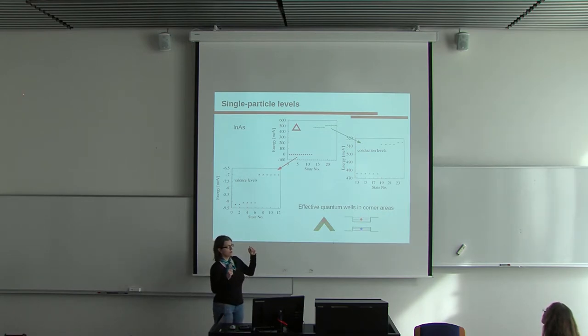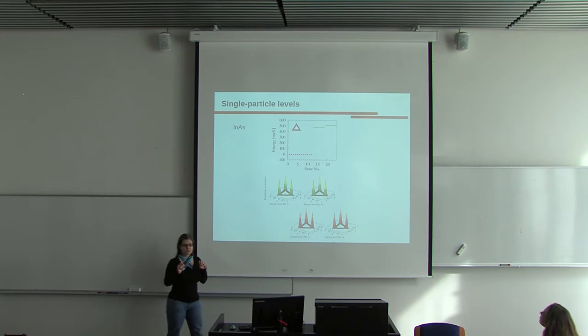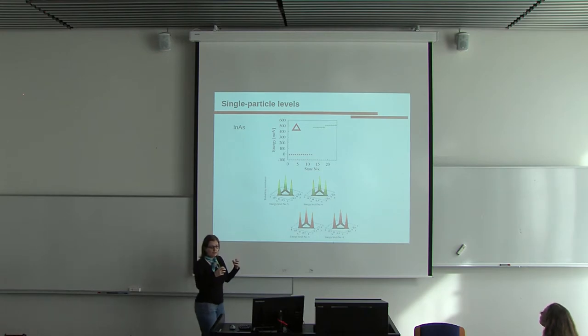Those wells attract low energy electrons and confine them in the corner areas. As a result, probability distributions associated with all states from the lowest conduction band group and from the highest valence band group are associated with corner localized probability distributions. They are bound in the corner areas and for sufficiently thin rings, they are totally depleted from the sides.